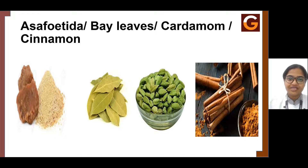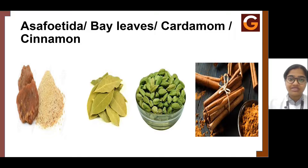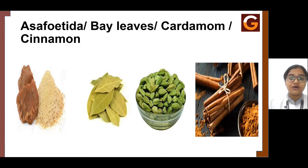In the previous session, we were discussing on different types of ingredients, such as culinary seeds — for example, carom seeds, mustard seeds, fennel seeds, coriander seeds. After that, we were discussing on different types of culinary nuts, like peanuts, walnut, almond, pistachio, crown nuts, hazelnut, and coconut.